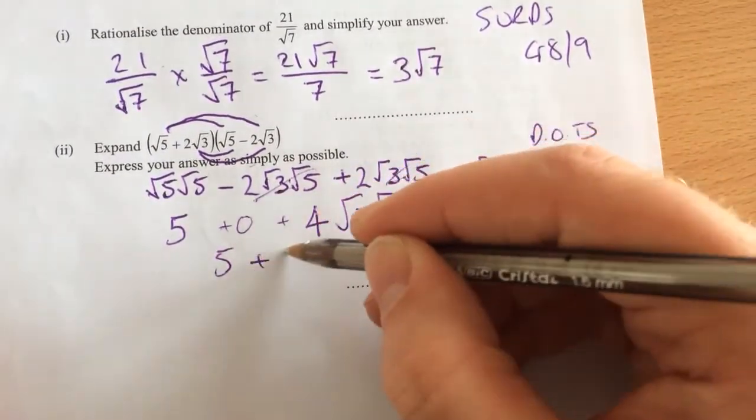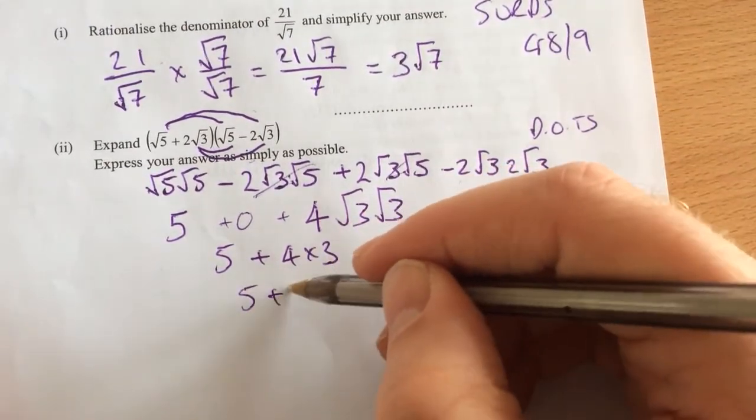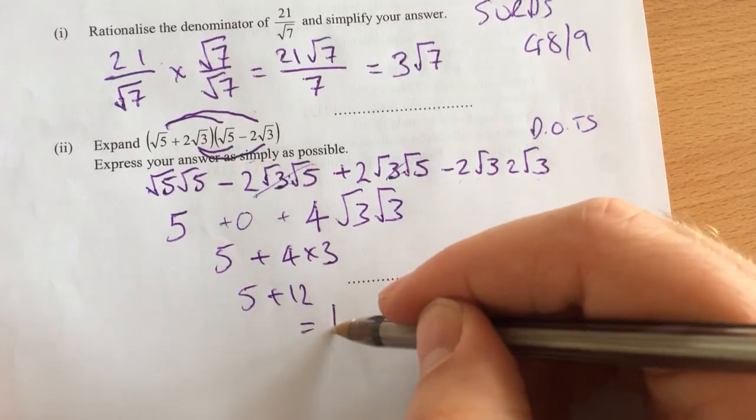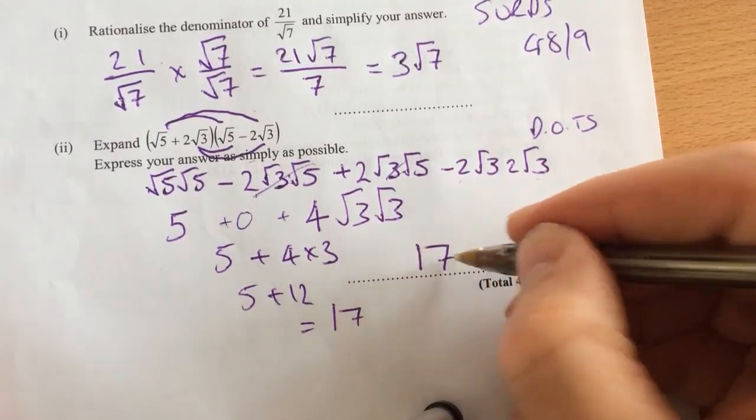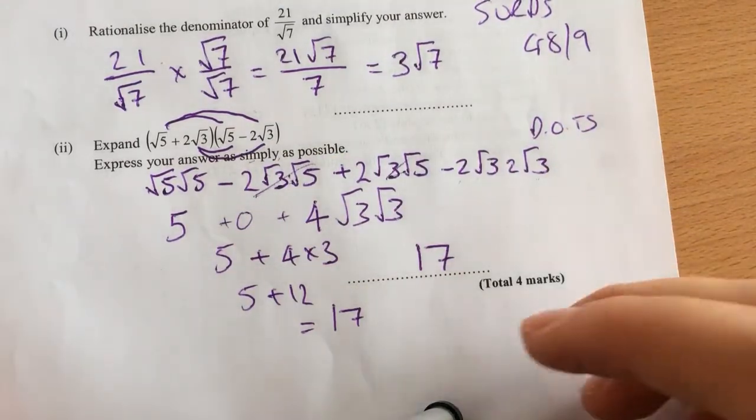Okay, so I could do 5 plus 4 times 3. Which is 4 times 3 is 12, 5 plus 12, plus 5 is 17. Put my final answer there being 17. And we've had to simplify it as far as possible, so a few steps to clear it up there.